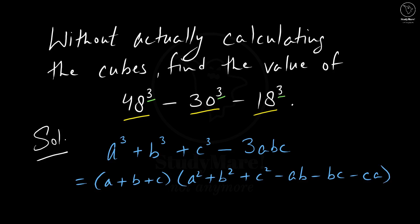If we compare, we have a³ which can be taken as 48³, then we have b³ which can be taken as 30³, and we have c³ which can be taken as 18³. But we have a problem here. Here we have plus signs and here we have minus signs. So unless and until we make it similar, we cannot use the identity. So our first objective is to see if we can write the given expression in terms of a³ + b³ + c³.